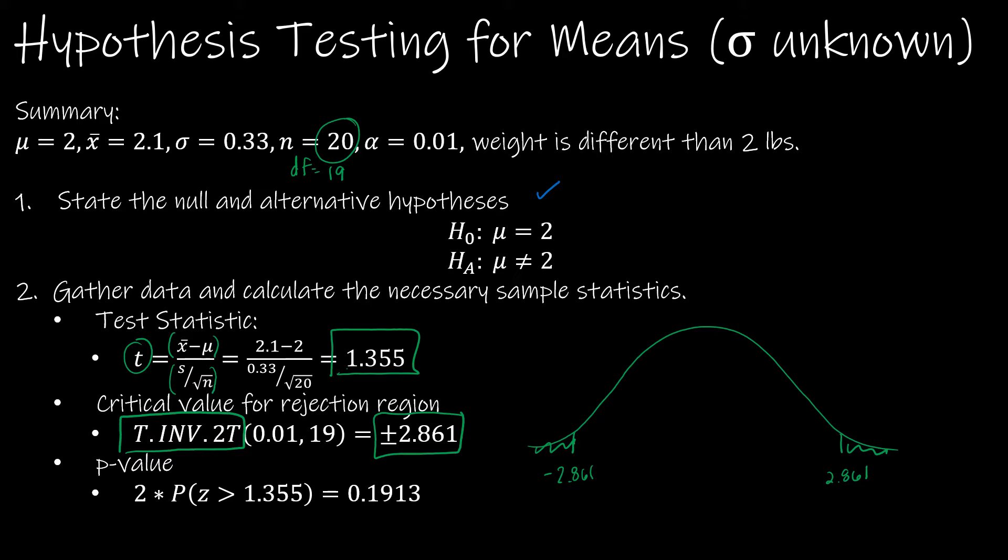And the reason that we have two of them is because there is alpha over 2 on the left and there's alpha over 2 on the right.